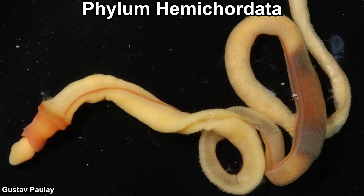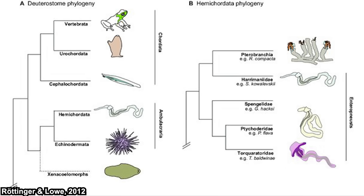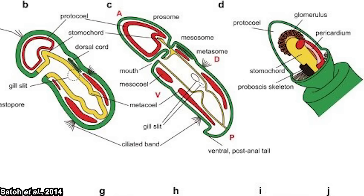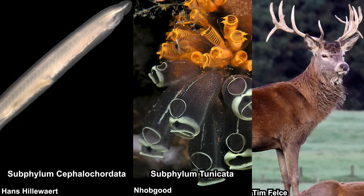What I said is the general idea. Hemichordata is now classified as its own phylum because, first, phylogenetic analysis found them grouped together with the echinoderms, and second, what we thought was a notochord inside them is actually a different structure, now called a stomochord — it basically has the same function though. So now Phylum Chordata is divided into three subphyla: Cephalochordata, Tunicata, and Vertebrata.